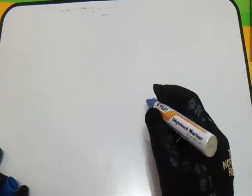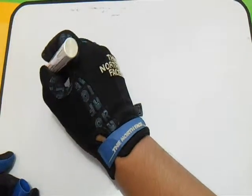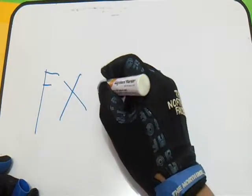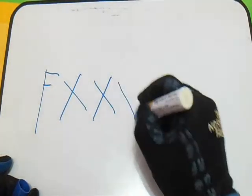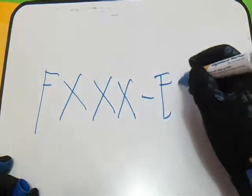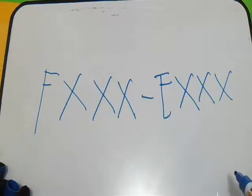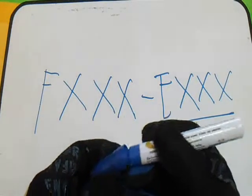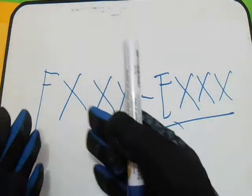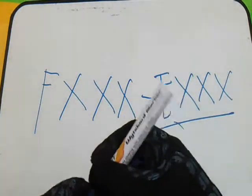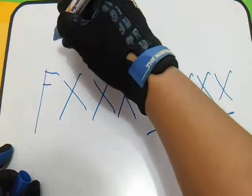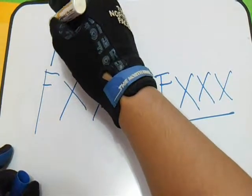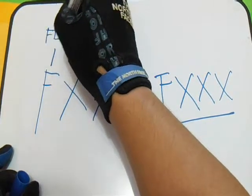The SAW filler metal identification system has F-X-X-X-X-X format. This is the SAW identification system. In this, each letter and number has a different meaning. This F indicates flux.